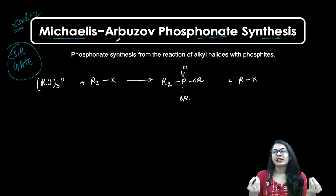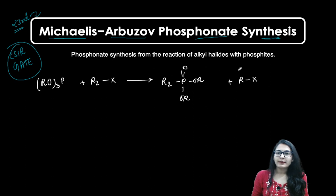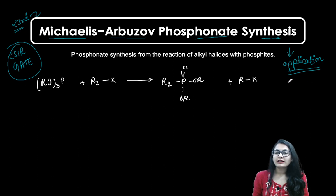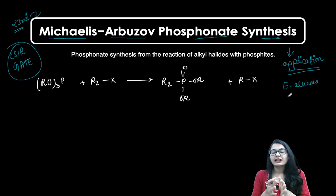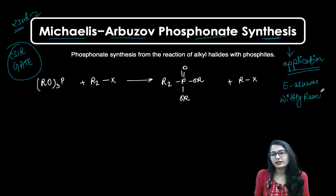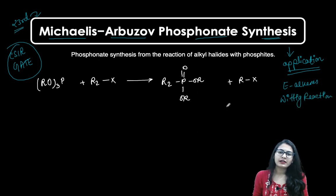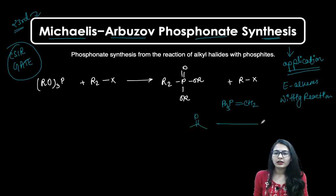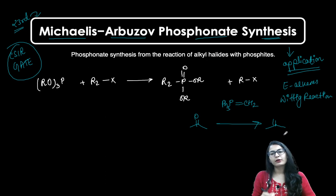As long as the name looks, it's a very simple reaction and it has very wide applications. Let me first tell you about the application, then only you will be able to understand why we have to study this reaction. The application is that it is very useful in synthesizing E-alkenes, just like we study the Wittig reaction. In the Wittig reaction, you have a simple phosphonium ylide, and you are converting your ketone to the alkene. This is what you get from the Wittig reaction.